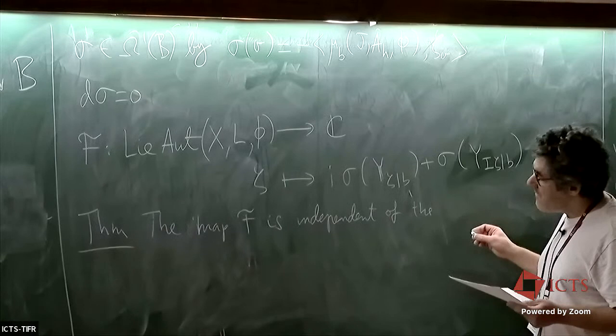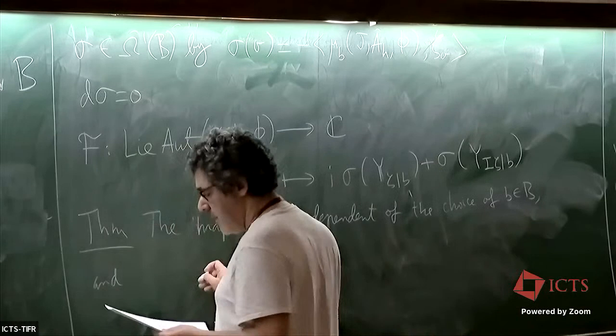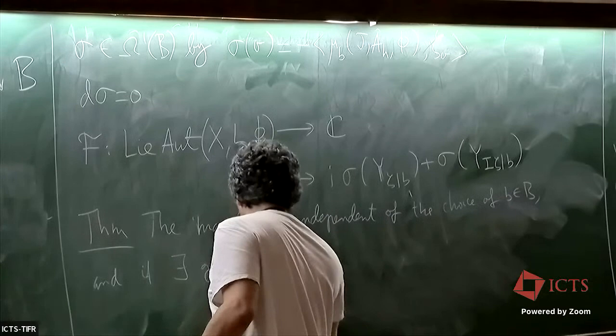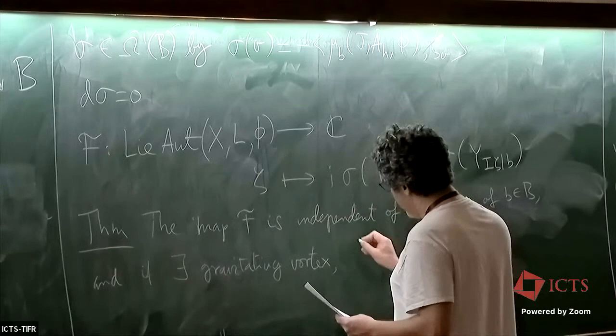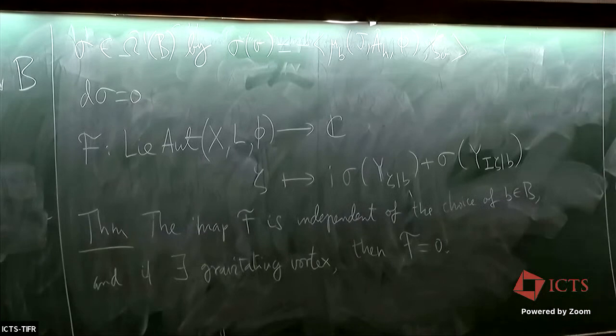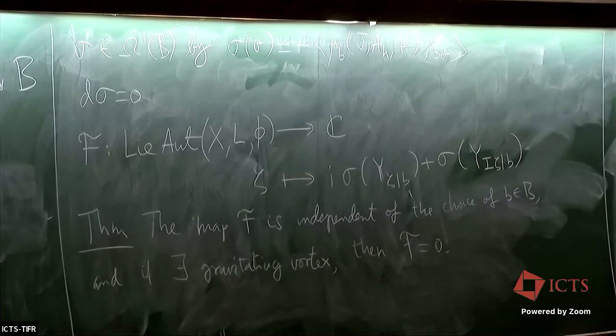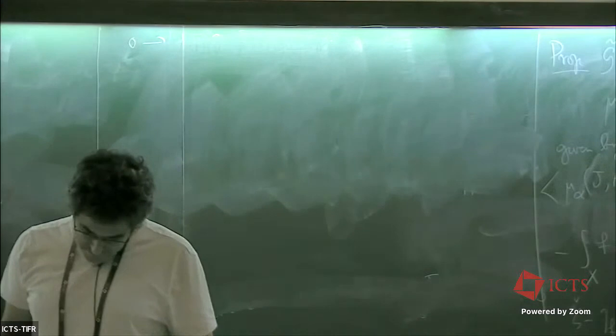And using the fact that sigma is closed, one can prove a theorem. A few theorems. Okay. So this map is independent. I'm not just applying formally non-theory about Kähler actions of groups in symplectic and Kähler geometry. The map F is independent of the choice of B. And if there exists a gravitating vortex, then F is zero.